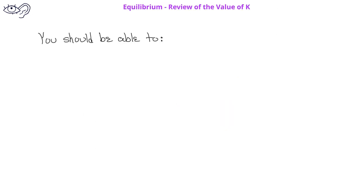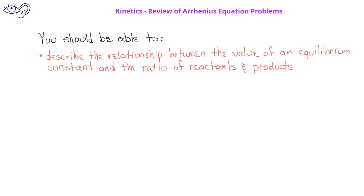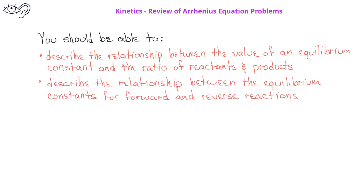By now, you should be able to understand the relationship between the value of the equilibrium constant and the ratio of reactants and products for an equilibrium system. You should also be able to describe the relationship between the equilibrium constants for forward and reverse reactions.